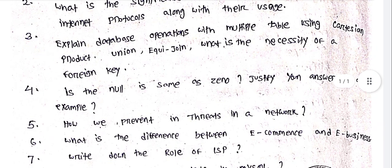Explain database operations with multiple tables using Cartesian product, union, and equi-join. Next question: what is the necessity of a foreign key?